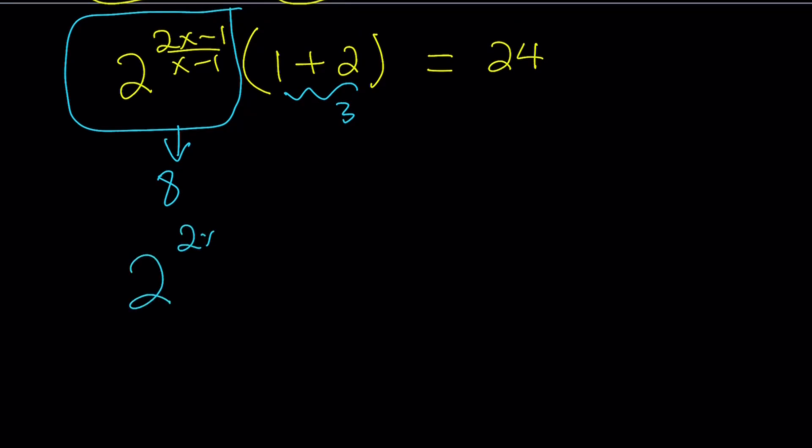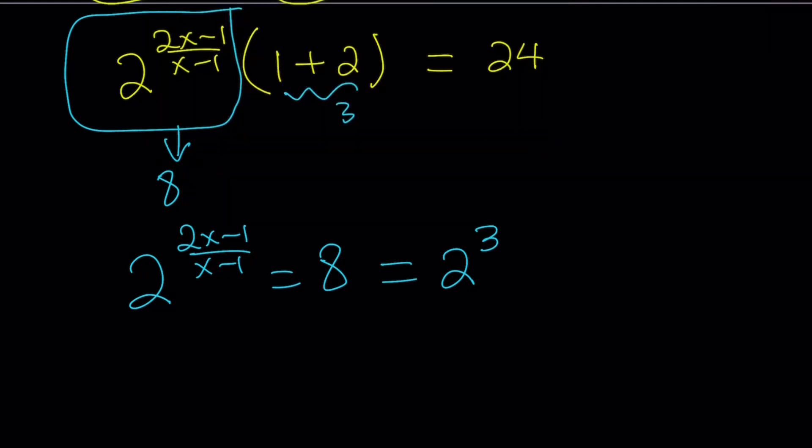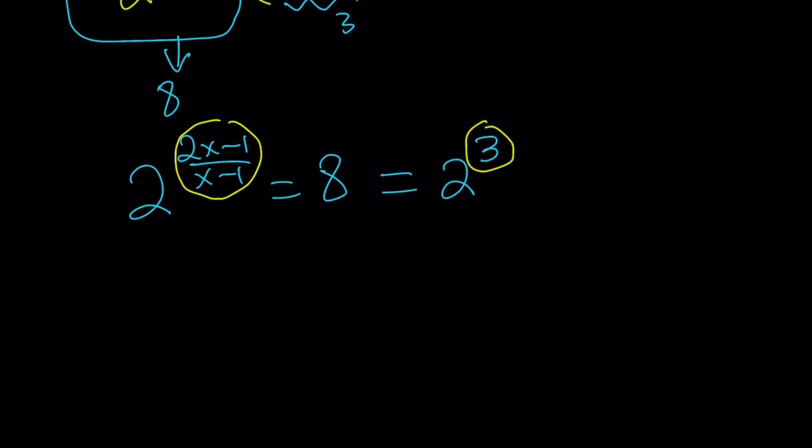Let's go ahead and write a new equation with that. 2 to the power of 2x minus 1 over x minus 1 equals 8. And 8 is just 2 to the third power. Now we can set these equal to each other. Set what? The exponents. Since we have the same base, it means that the exponents are also the same.